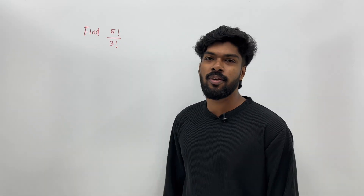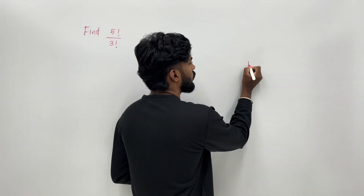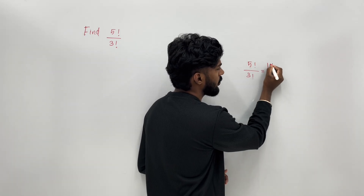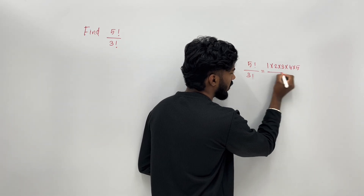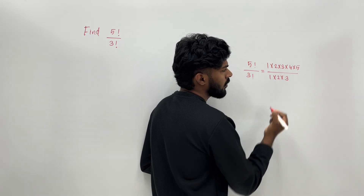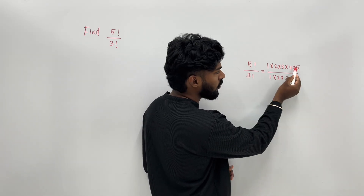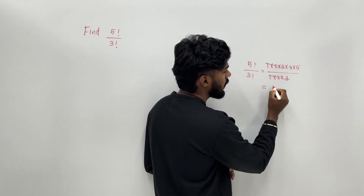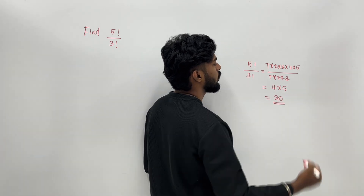Find 5 factorial divided by 3 factorial. How do we do this? 5 factorial is 1 into 2 into 3 into 4 into 5, divided by 3 factorial which is 1 into 2 into 3. We cancel the common terms. The answer is 4 into 5, which equals 20.